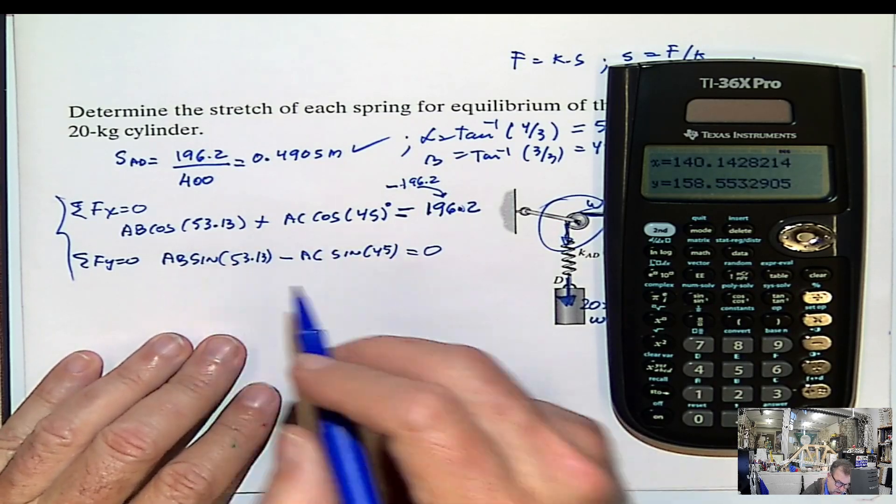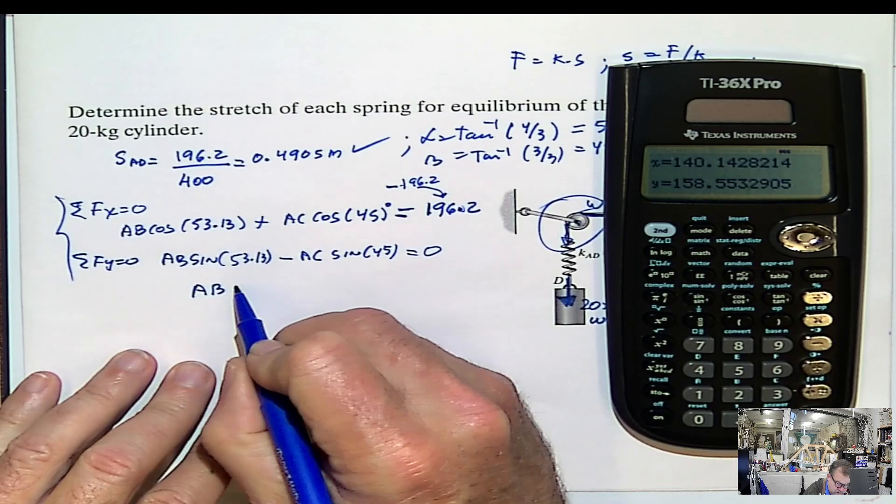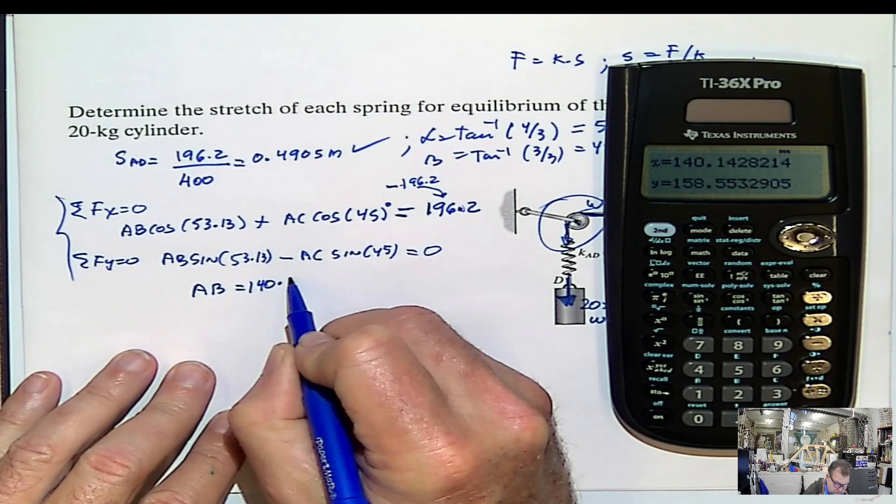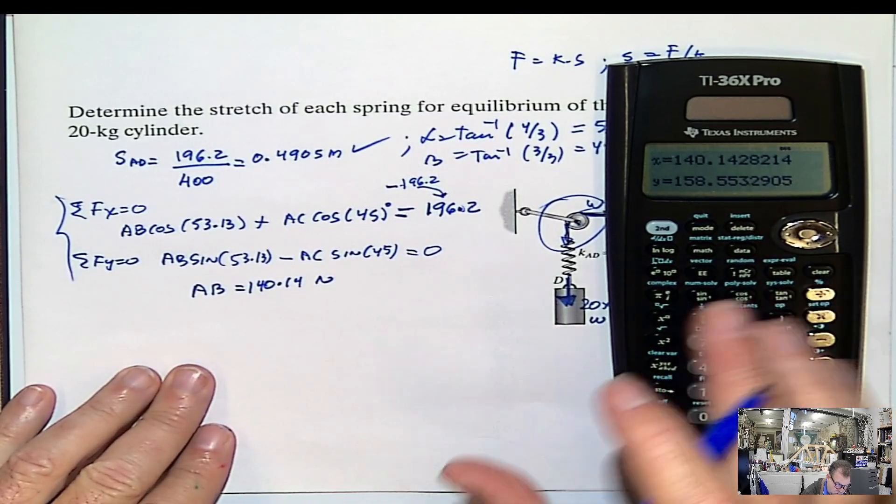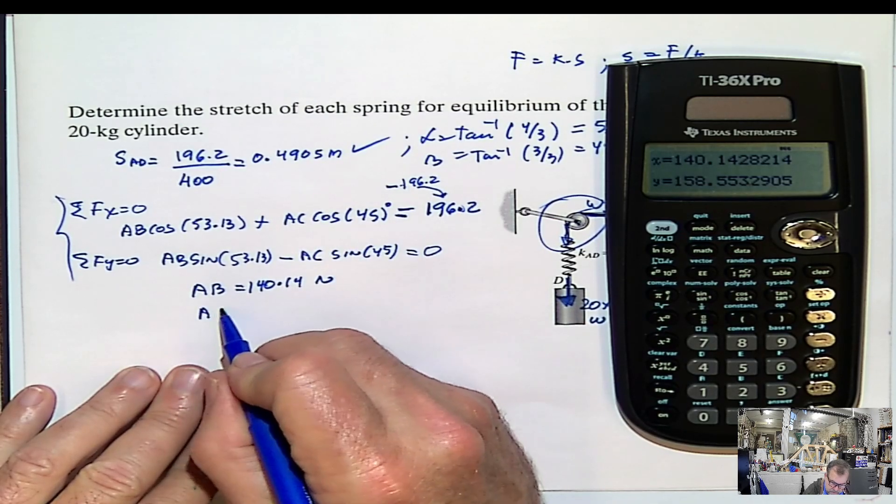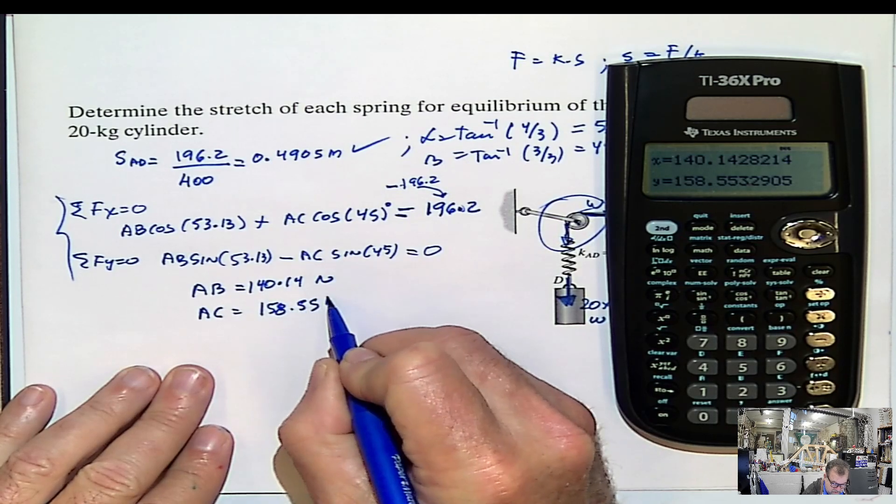So, and then we get the x and y. Remember, x is AB, 140.14 newton. And y would be our other variable, AC, 158.55 newton.